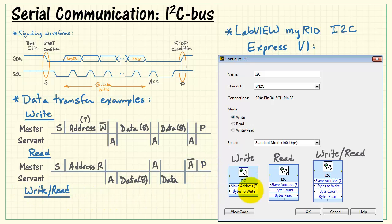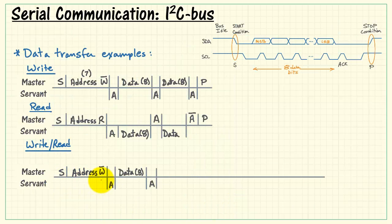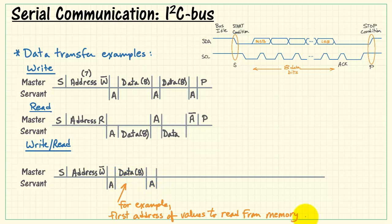Finally, if we were doing a combination of write and read in the same transaction, that would be implied by this mode over here. We begin with a start, send the address, do a write operation, get the acknowledge, send data, get an acknowledge, and in this case the data might be the first address of values to read from a serial memory.